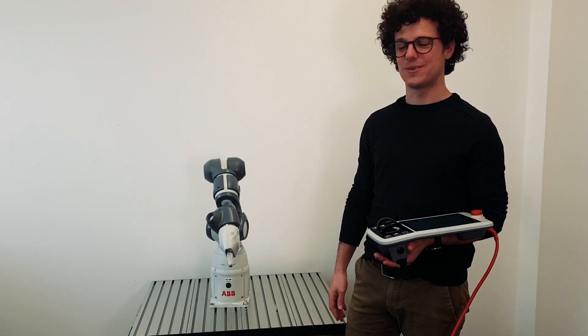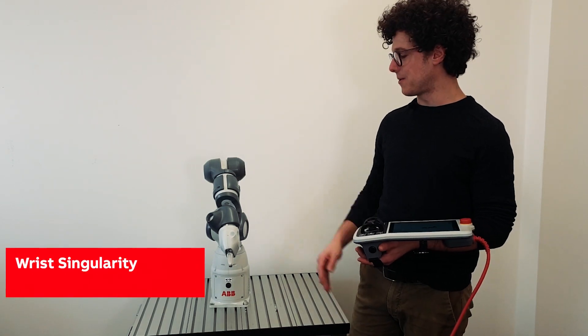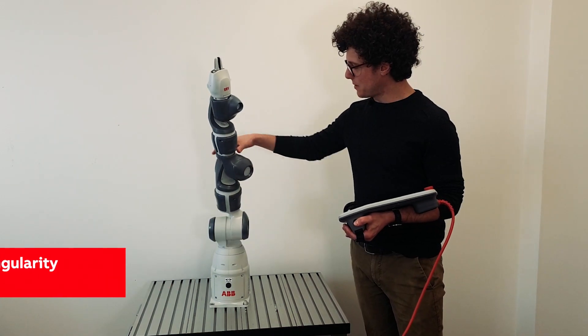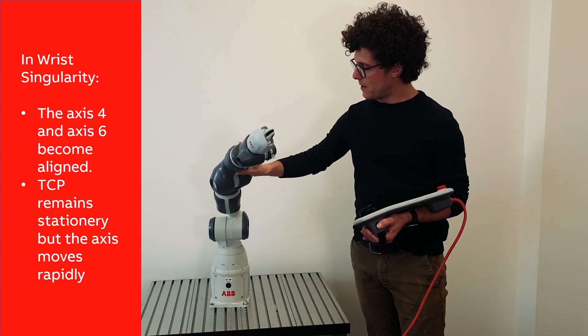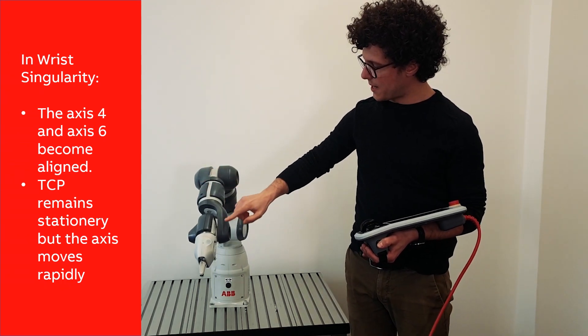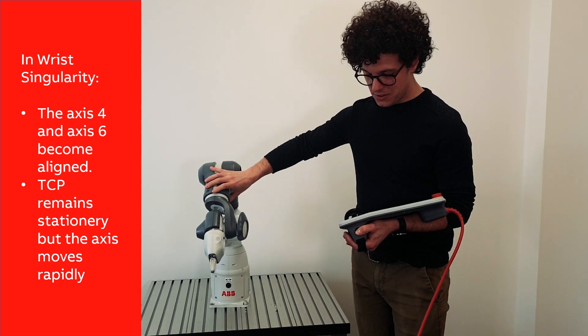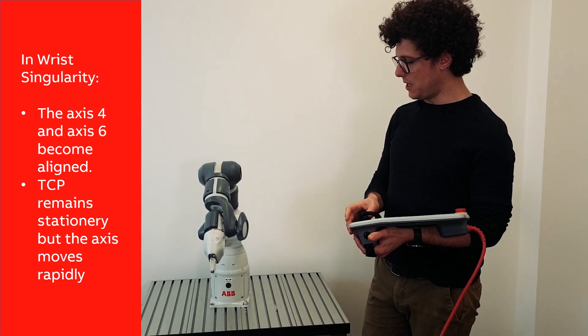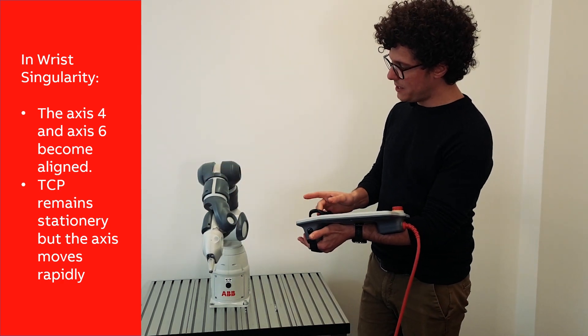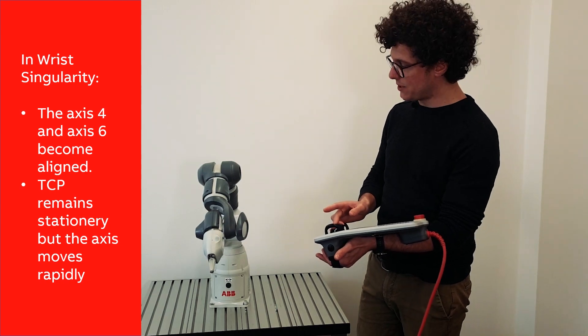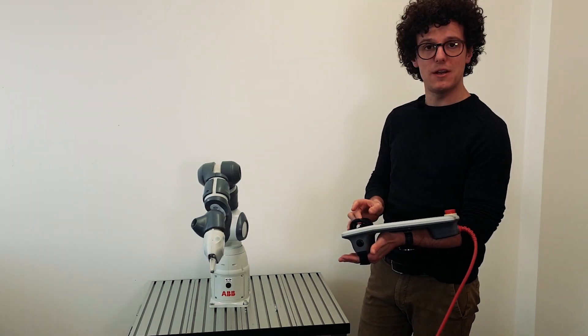The most frequently encountered singularity in robotics is the wrist singularity. In this particular type of singularity, axes 4 and 6 of the robot are aligned, and during the robot motion, as you can see, the TCP of the robot will remain still while these two axes rotate very fast, causing a very inefficient motion.